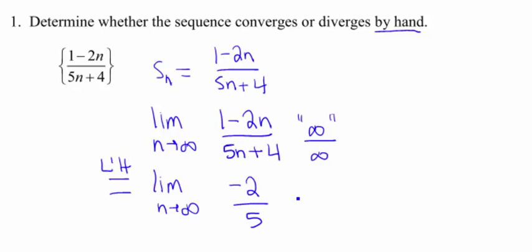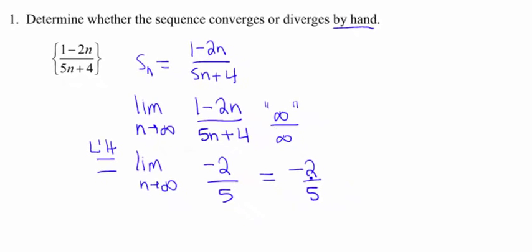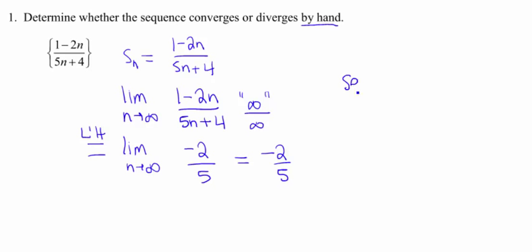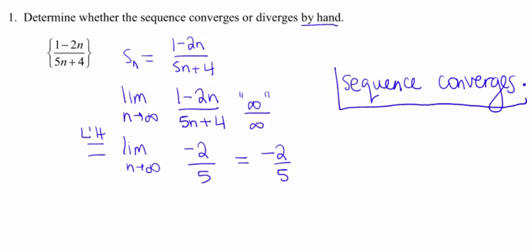Guess what, my n's go away, so this limit is just gonna be negative 2 fifths. Is negative 2 fifths a number? Absolutely. So we say that this sequence converges.